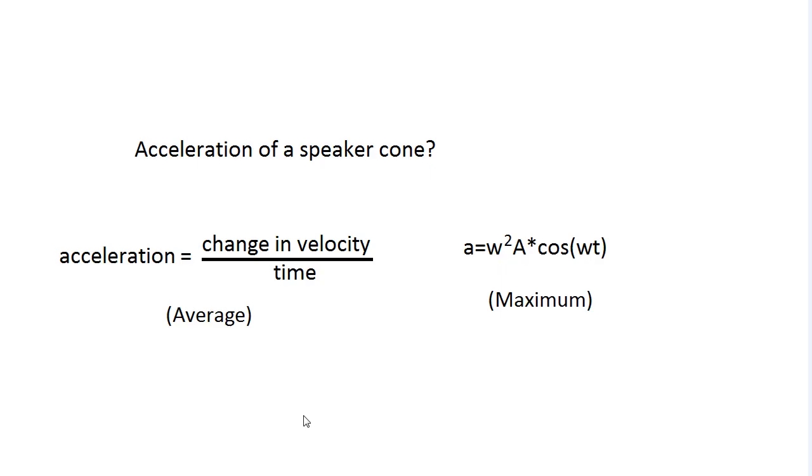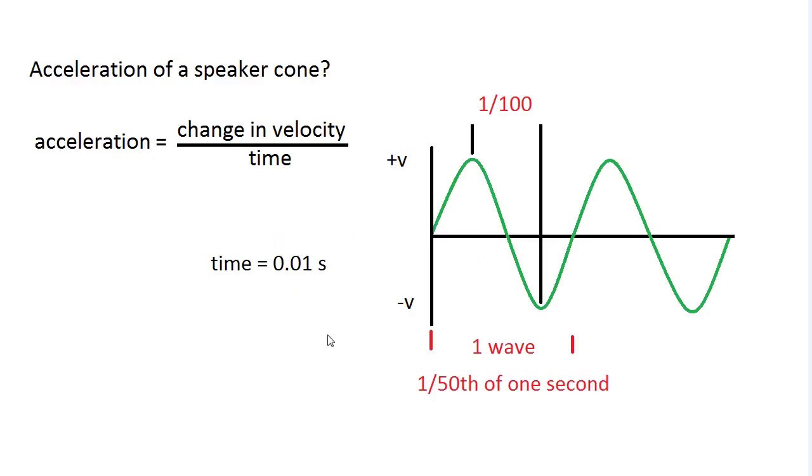I'm going to be using two equations. Right here is the generic linear acceleration, which is change in velocity over time. This is a general equation, and to find its maximum acceleration, I'm going to be using this equation right here. So first off, we're going to find the average acceleration. Change in velocity over time. So what is the time?